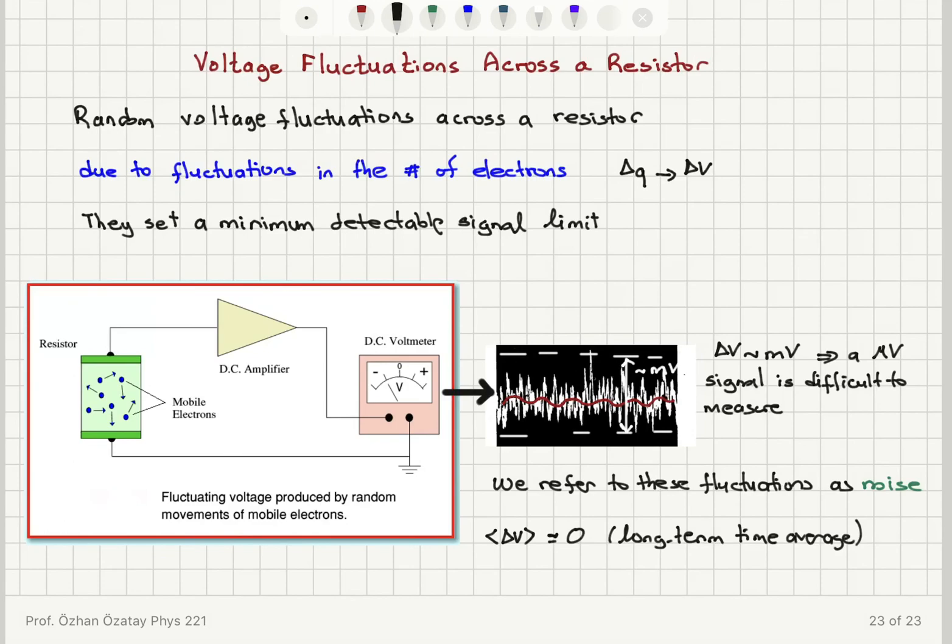And basically, we can detect the microvolt DC signal as long as the noise or the random fluctuations of the electrons causing the voltage fluctuations can be averaged out to zero in the long term.